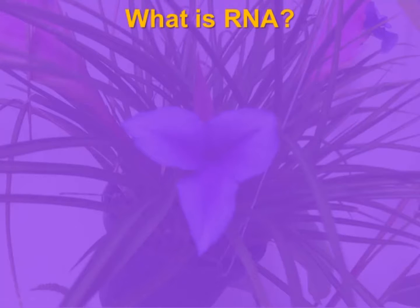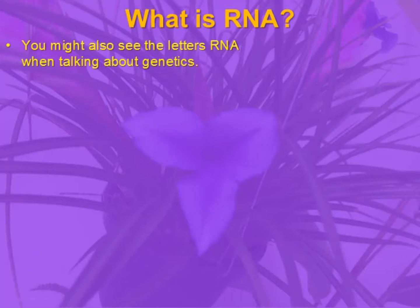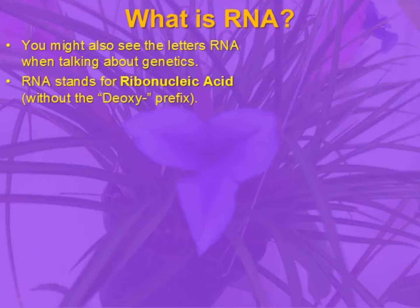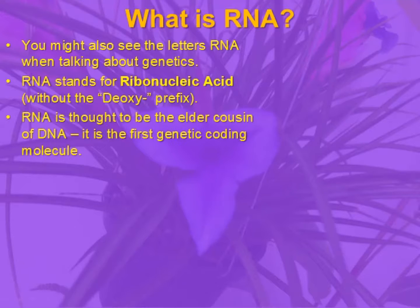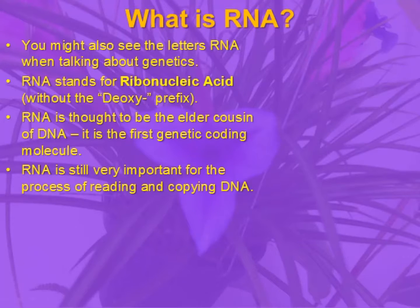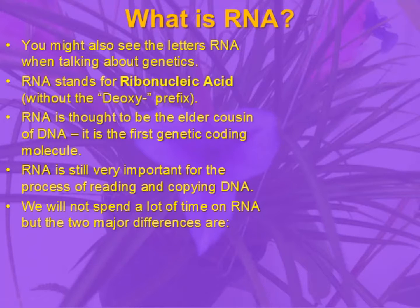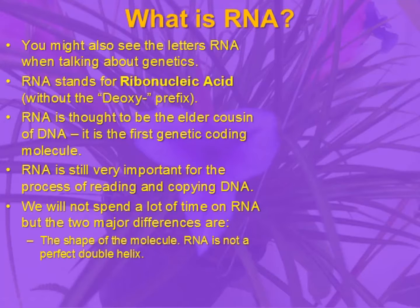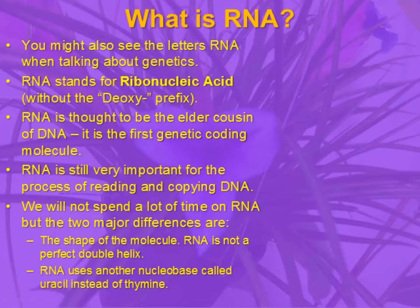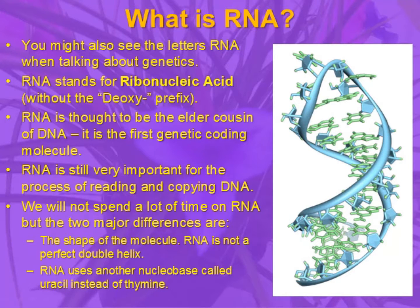We also quickly need to ask: what is RNA? You may have heard of DNA before, but you might not have heard of RNA. This is another kind of molecule. It stands for ribonucleic acid, so it does not have the D prefix. RNA is thought to be the elder cousin of DNA, the first genetic coding material that evolved on Earth — the first time that chemistry could save information. RNA is still important today; it is used in the process of reading and copying DNA. The two main differences are: the shape of the molecule — RNA is not a perfect double helix — and RNA uses a different kind of nuclear base from DNA, called uracil, which replaces thymine.